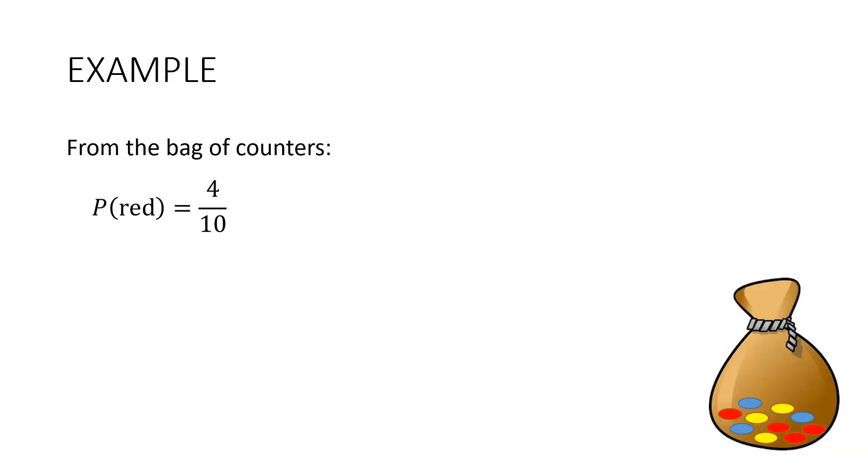Let's see whether that's true. So from my bag of counters, suppose my event is that I draw a red counter. And so the probability is going to be 4 tenths. The complementary event that I don't draw a red counter is going to have to be 6 out of 10. Let's add those up. Probability of red plus the probability of not red is going to be 4 tenths plus 6 tenths is 10 over 10 which is 1.